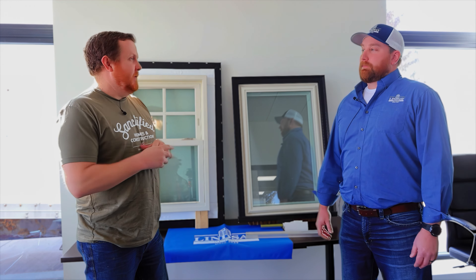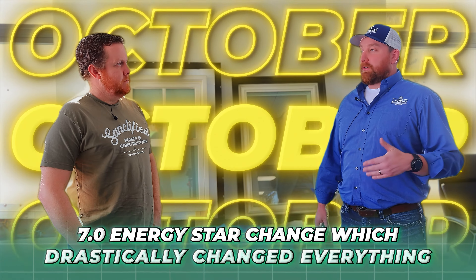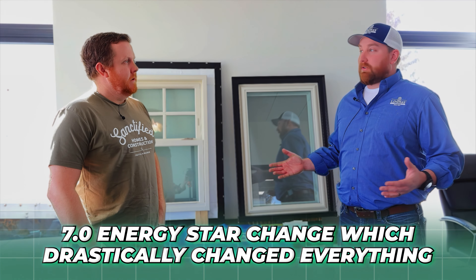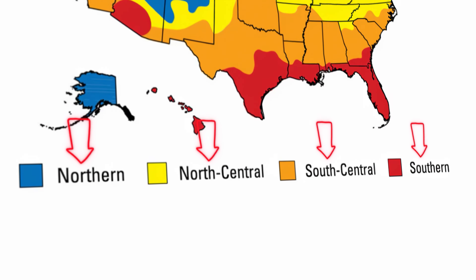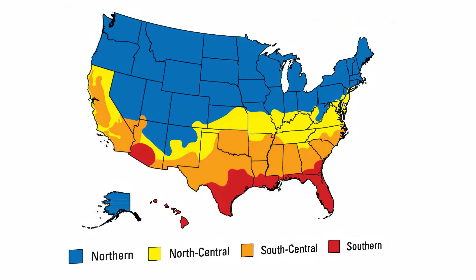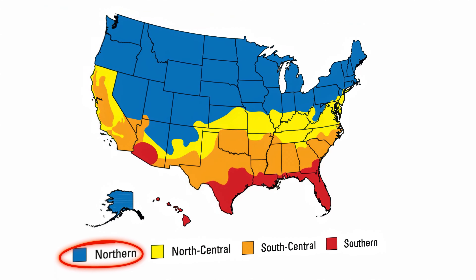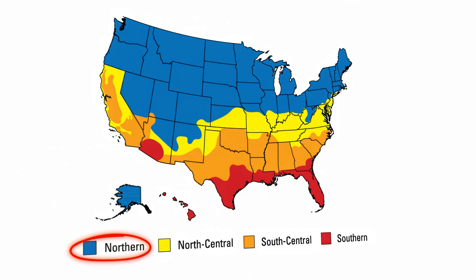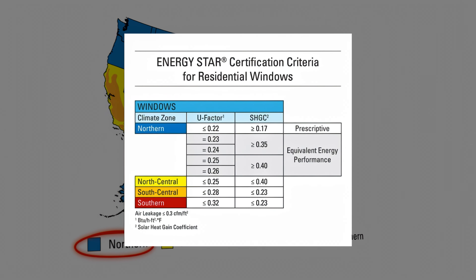Let's explain the Energy Star rating, because it's actually changed recently. In October they came out with the 7.0 Energy Star change, which drastically changed everything from the previous version. Essentially, depending on the zone of the country you're in, you have to meet certain standards for U-value and solar heat gain to be energy efficient for that zone. In the northern zone it's a tiered system — you can have a U-value of 0.22 up to 0.25 depending on what the solar heat gain is. It always used to just be 0.27, 0.29, or 0.30 through the years, but now we've got a bigger range.